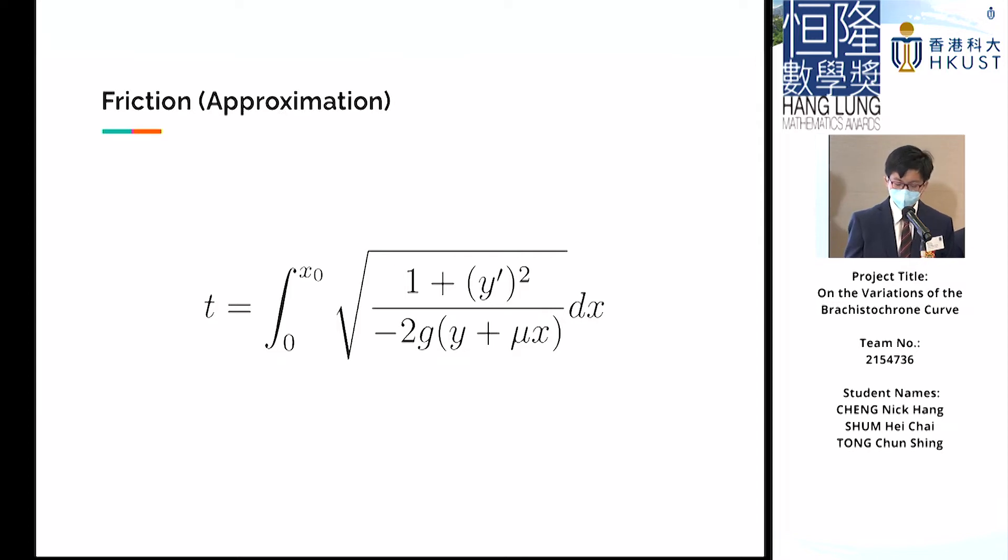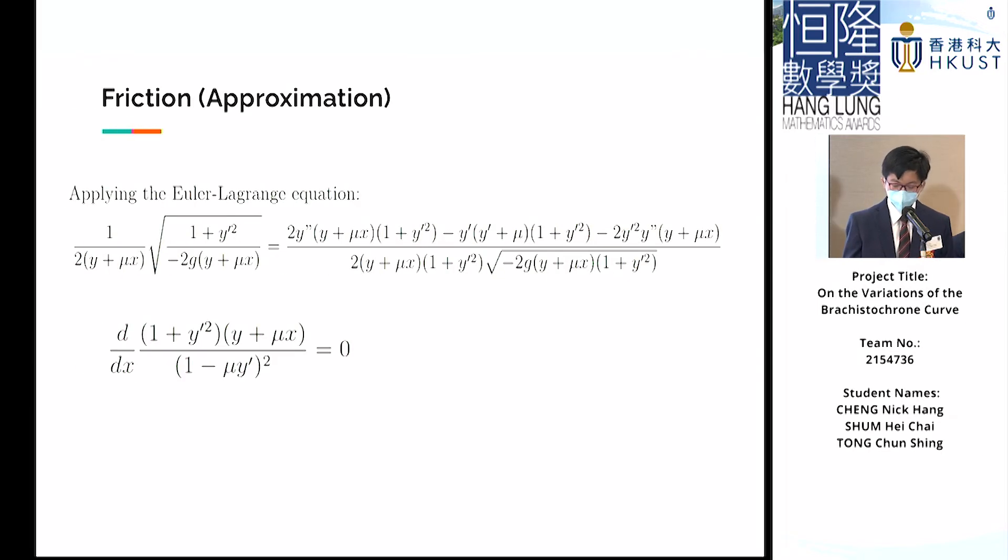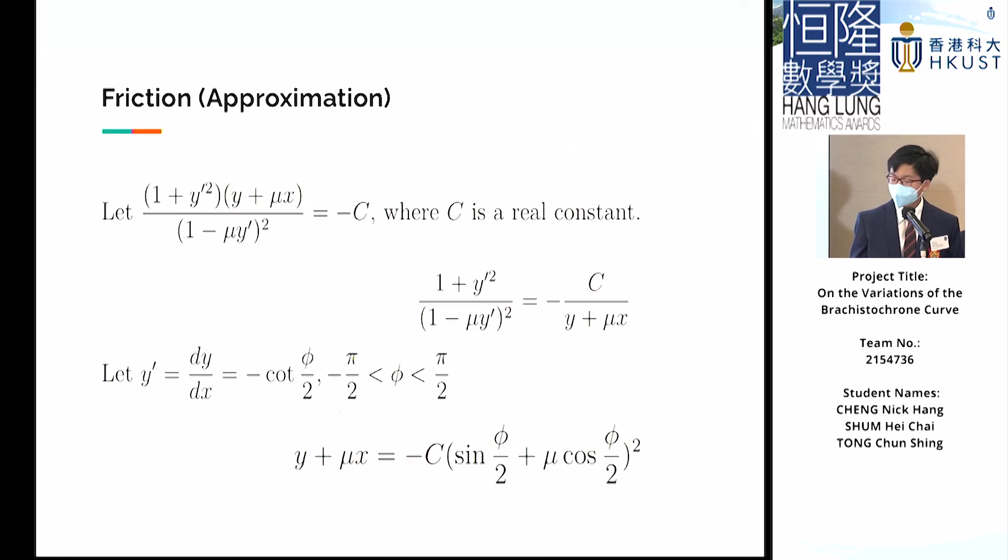Again, using ds/v, we express the total time in terms of another integral. Applying the Euler-Lagrange equation on the integrand, we initially have a rather complicated expression that can be simplified substantially into the derivative with respect to x of an expression equals 0. This implies, of course, that that particular expression is a constant and would have to be negative c.